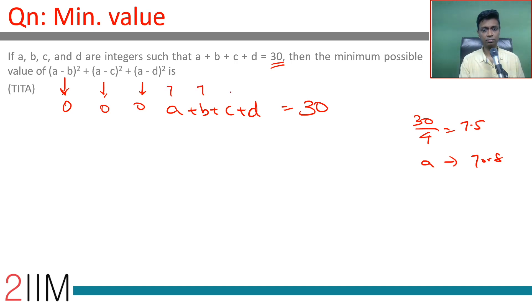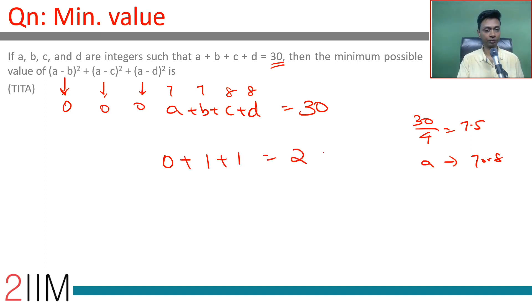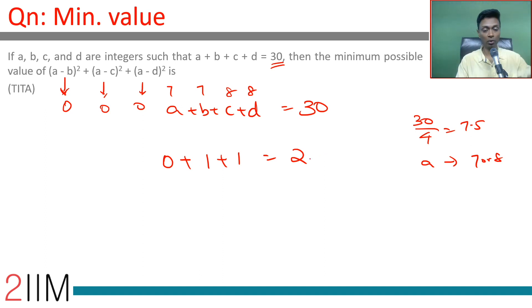Try A=7, B=7, C=8, D=8. Then (A−B)² = 0, (A−C)² = 1, (A−D)² = 1. So 0 plus 1 plus 1 equals 2. This looks like the minimum.